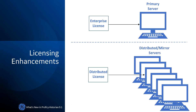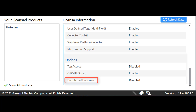Licensing Enhancements. To set up a distributed or mirror environment, previously the enterprise license was used, which you could apply for one primary and two distributed or mirror servers. Now the licensing is separate for primary and distributed or mirror servers. For the primary server alone, use the enterprise license. For all the distributed or mirror servers, use the new distributor license.